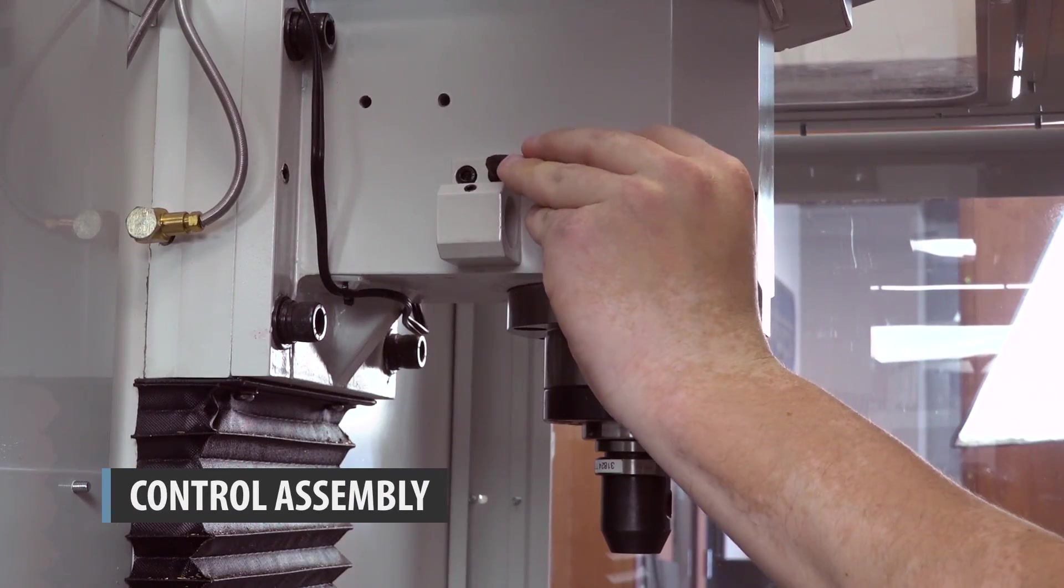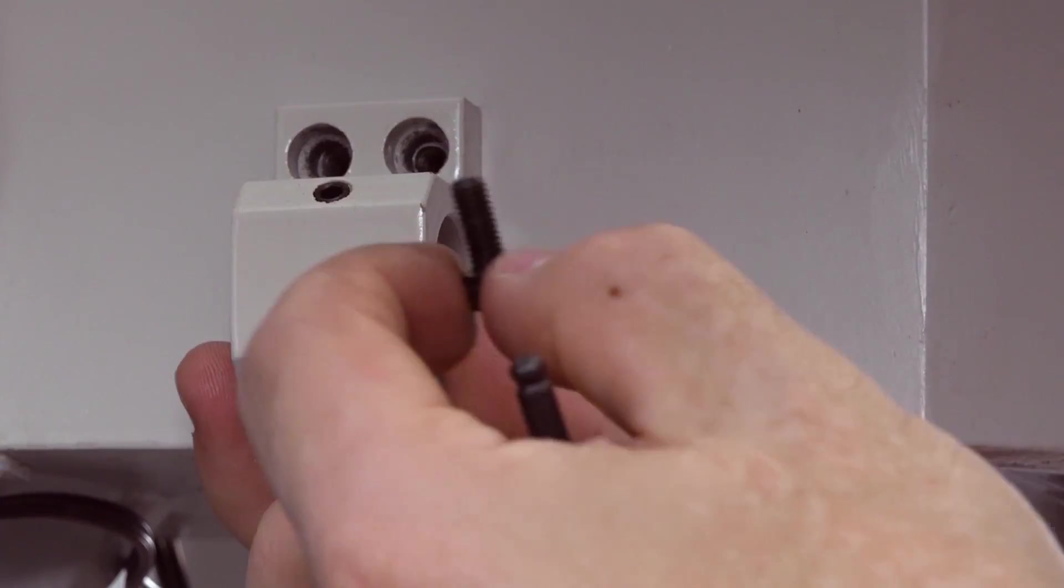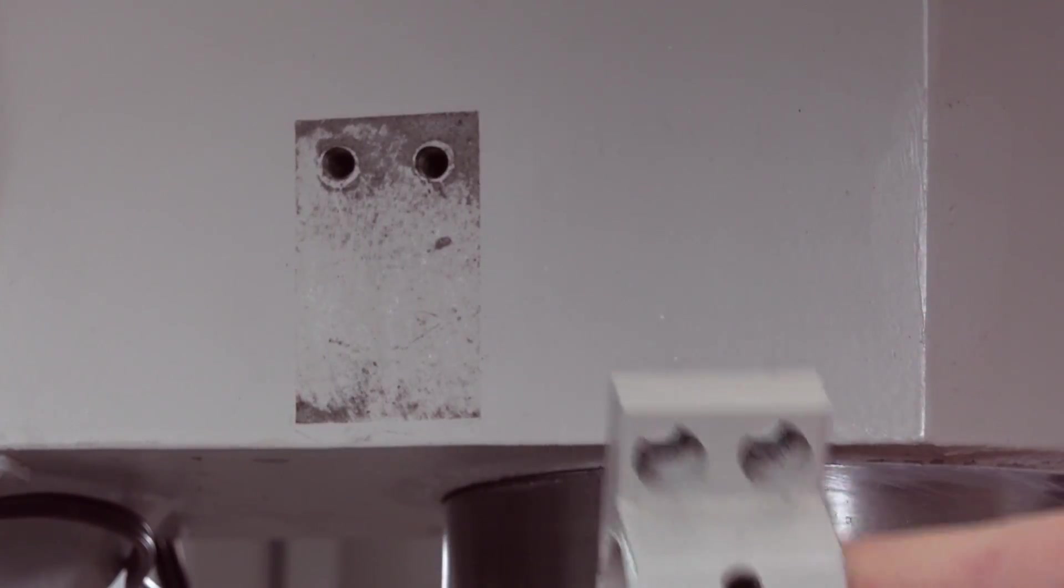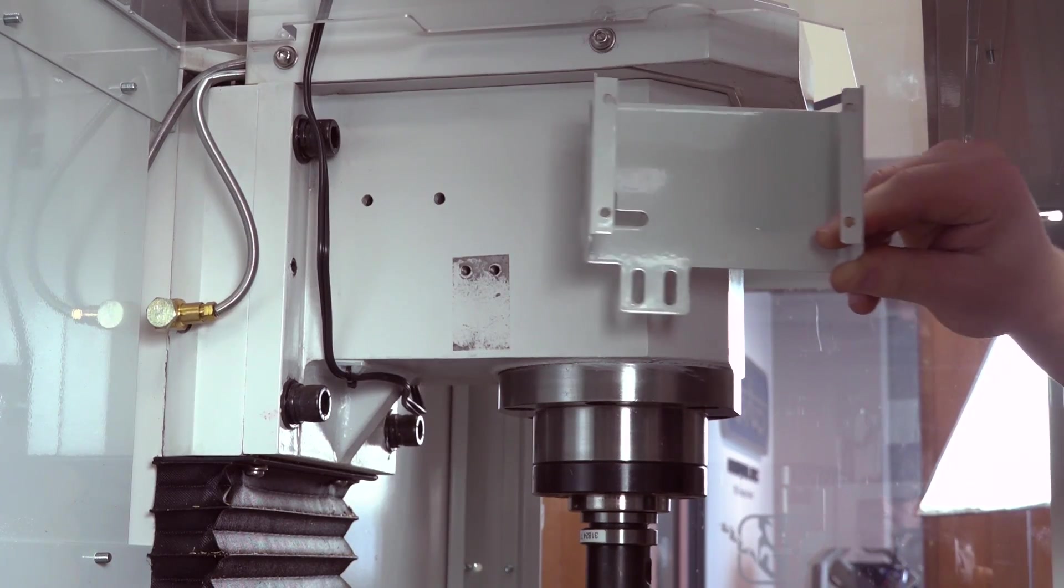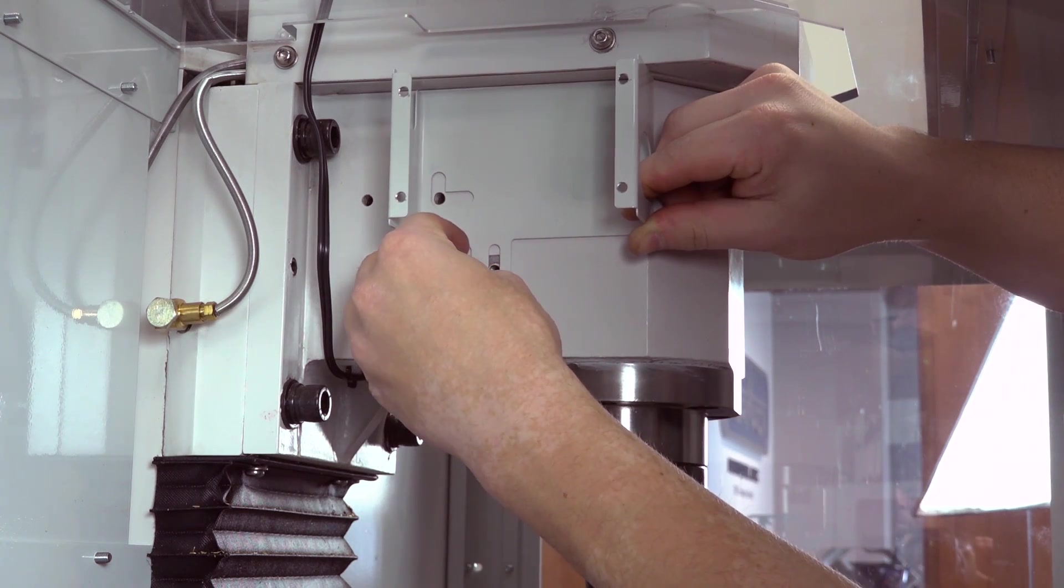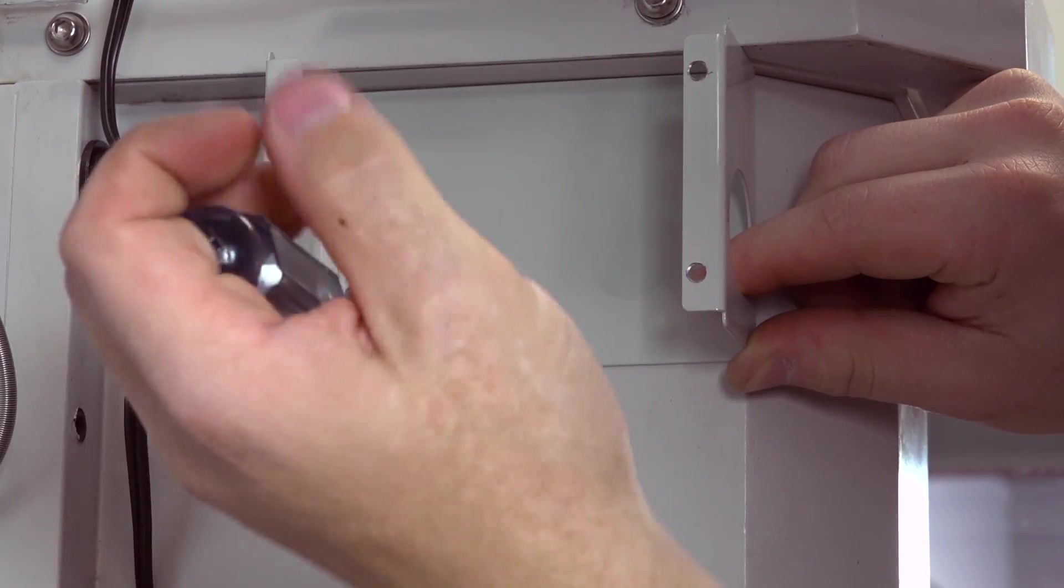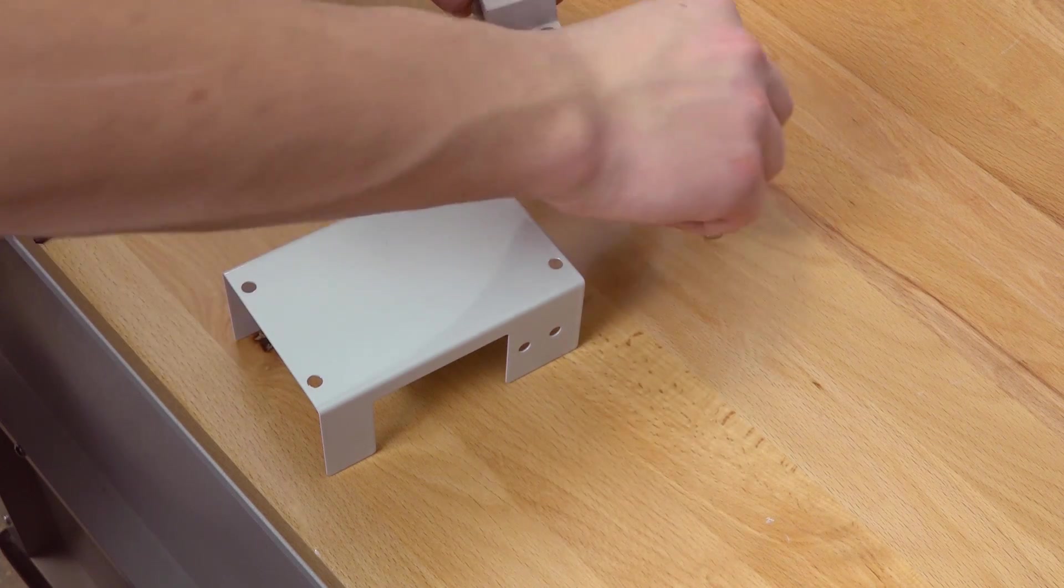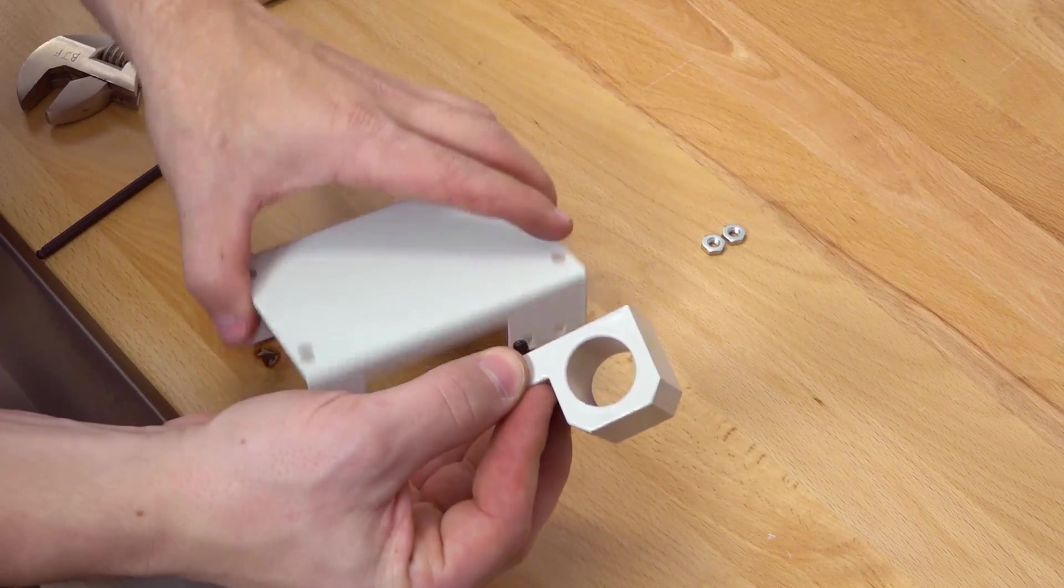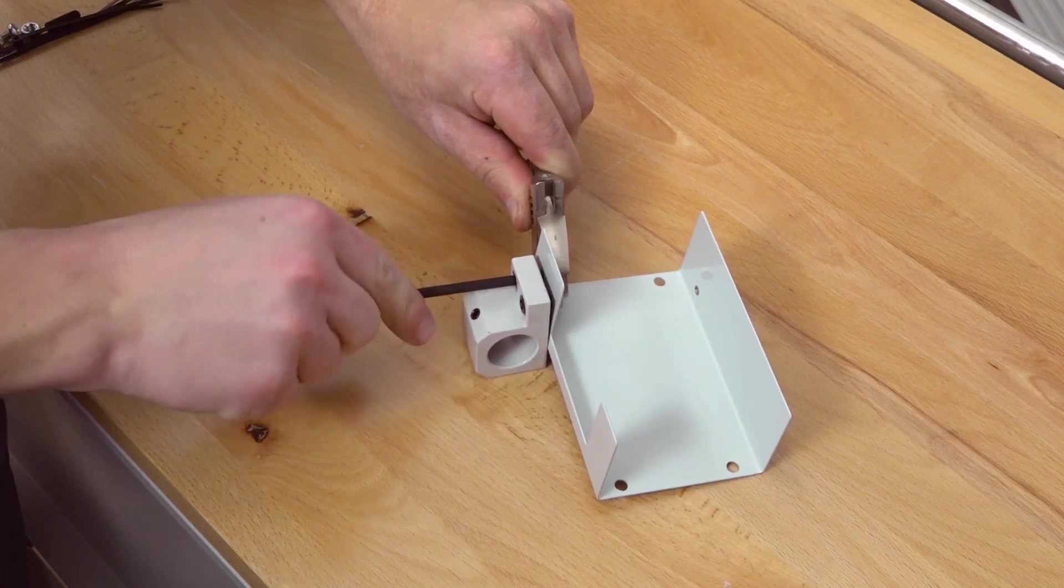Using a 4mm hex wrench, remove the two M5 by 15mm socket head cap screws that secure the coolant hose bracket to the side of the mill head. Set all aside. Using two M5 by 6mm Phillips head machine screws, adjust the button box base until it is flush with the bottom of the spindle cabinet. Securely tighten with the provided machine screws. Using two M5 by 12mm socket head cap screws and two M5 nuts, mount the coolant hose bracket to the button box cover. Set the assembly aside.